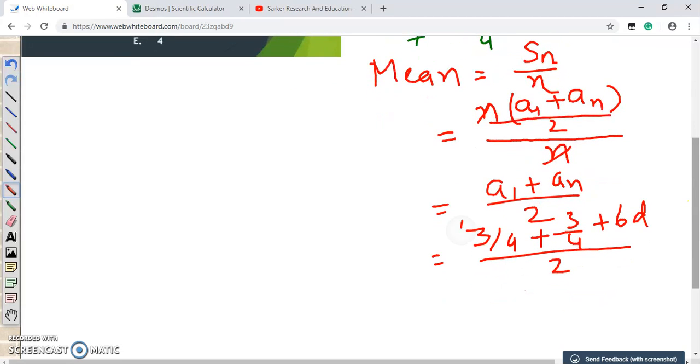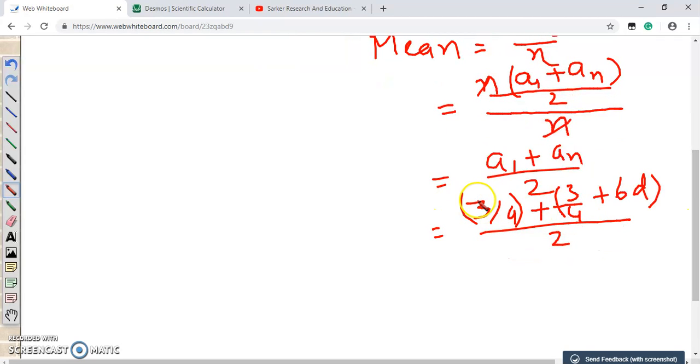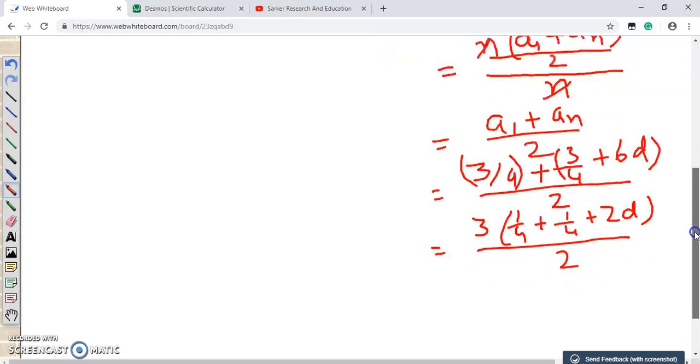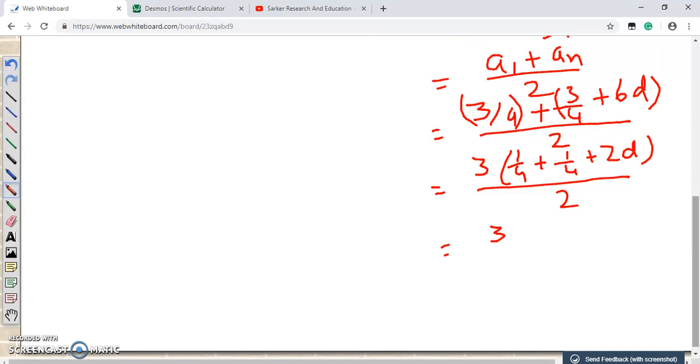So let me just give a bracket just in order to separate these numbers. So this is the first number, one is a1 and the second one is the a7. We see that 3 is a GCF of this all together. So we can just factor 3 out. So if we do that, it becomes (1/4 plus 1/4 plus 2D) divided by 2. So further we get 3 times (1/4 plus 1/4 is 2/4 plus 2D) by 2.